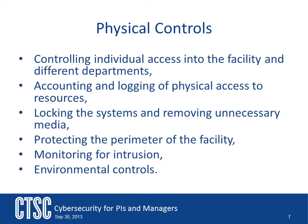Physical and environmental security controls are implemented to protect the facility housing system resources, the system resources themselves, and the facilities used to support their operation. In most CI project cases, these controls will mostly focus on employee safety and protecting servers. Often these will be taken care of by resources outside the project itself. The campus probably already has security in place for protecting employees, and the extent of your responsibility will be reminding them to be careful.